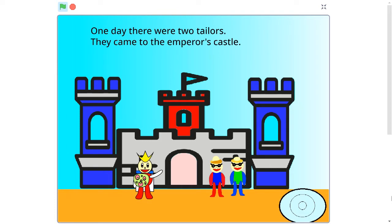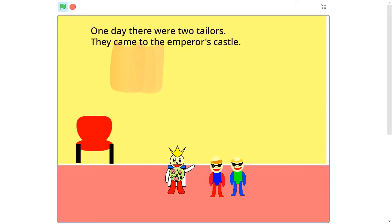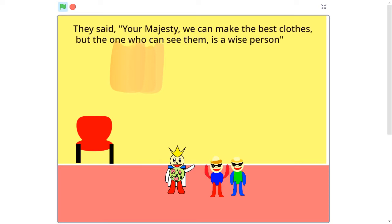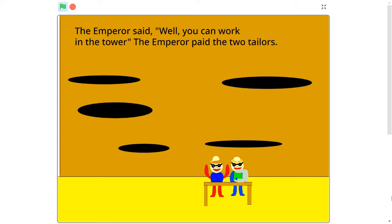One day, there were two tailors. They came to the Emperor's Castle. They said, 'Your Majesty! We can make the best clothes! But the one who can see them is a wise person.' They said, 'Well, you can work in the tower!' The Emperor welcomed the two tailors.